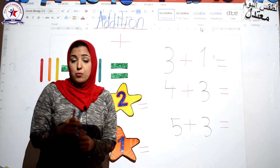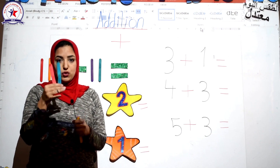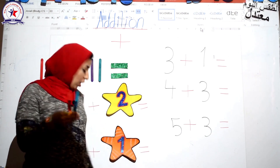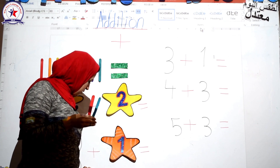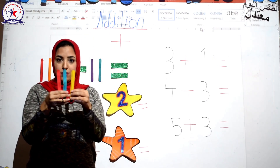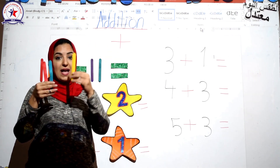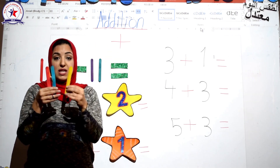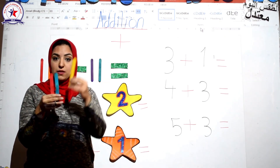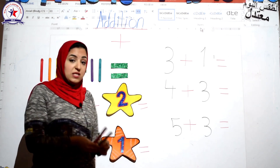What is the meaning of plus? Here I have some objects. I have one and two objects. Now I will add another one. So I have two objects and I will add another one — that is the meaning of plus. To add more objects or more numbers.